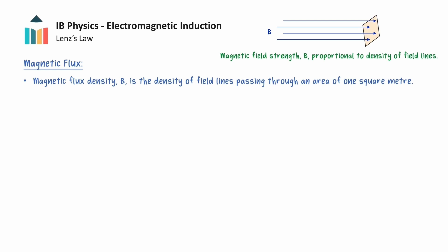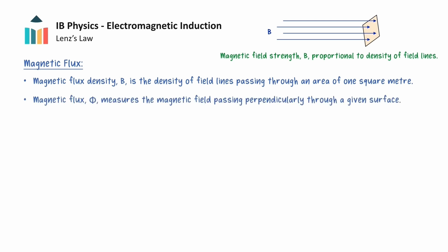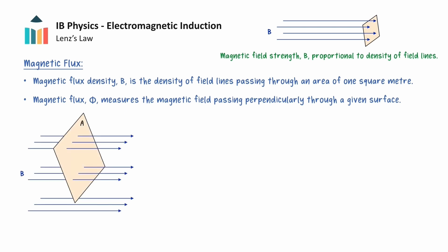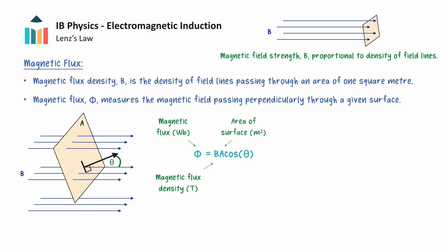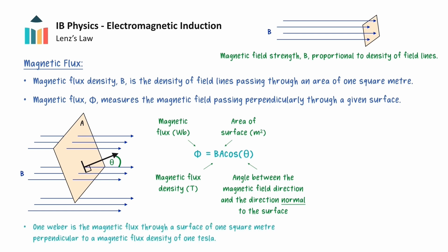With this in mind, the quantity magnetic flux, denoted with a capital phi, is a measure of how much of a magnetic field passes perpendicularly through a given area. If we consider the following diagram, we have a surface of area A that is tilted from a face-on orientation to the magnetic field by an angle theta. The magnetic flux through the surface can be calculated with the following equation. B is the magnetic flux density, A is the area of the given surface, and the angle theta is measured between the direction of the magnetic field and the direction normal to the given surface. Magnetic flux has units of webers, and one weber is defined as the magnetic flux through a surface of 1 square meter perpendicular to a magnetic flux density of 1 tesla.